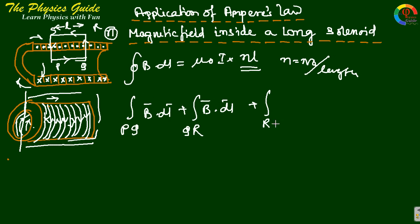Plus RS, B dot dL, plus SP, B dot dL equals μ₀NIL.